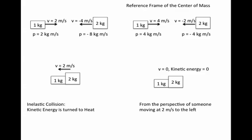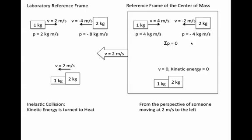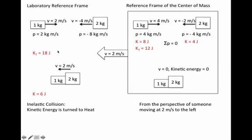This is called the reference frame of the center of mass, as opposed to the laboratory reference frame. In the reference frame of the center of mass, the total momentum is always zero. The whole system is moving at 2 meters per second with respect to the laboratory. In the beginning there was kinetic energy of 8 joules and 4 joules respectively — 12 joules total — and no energy at the end. Both reference frames agree we've lost 12 joules of kinetic energy to heat.